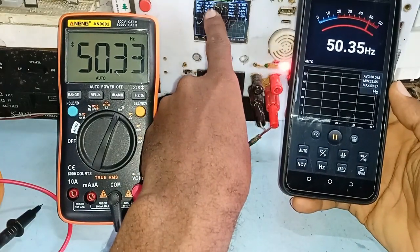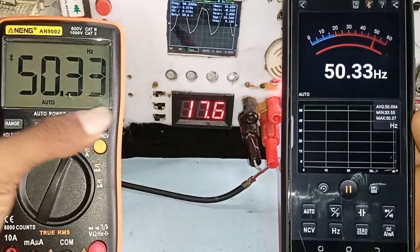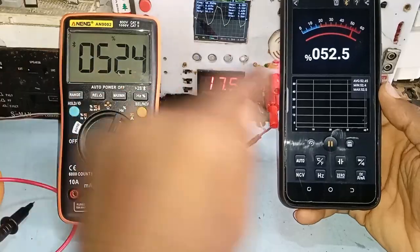The frequency and the duty cycle display on the digital multimeter corresponds to the value of my mini oscilloscope and I must say this is amazing.